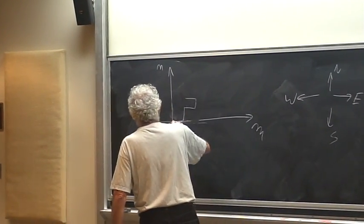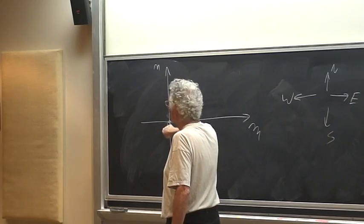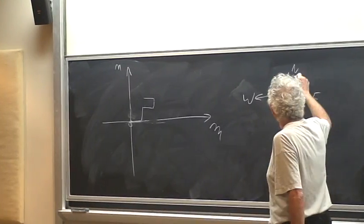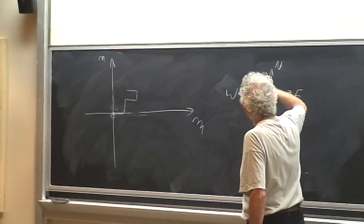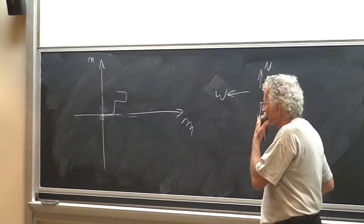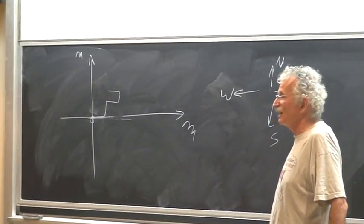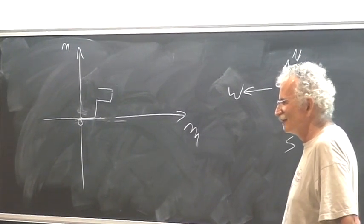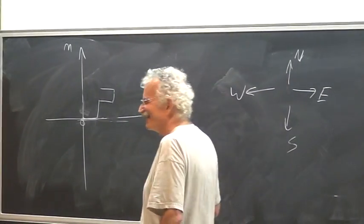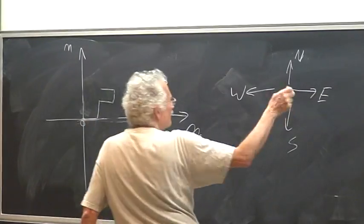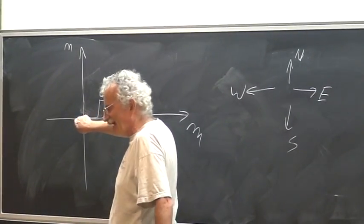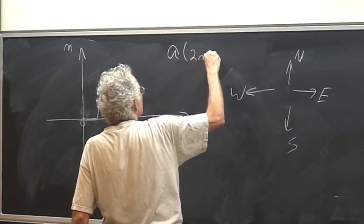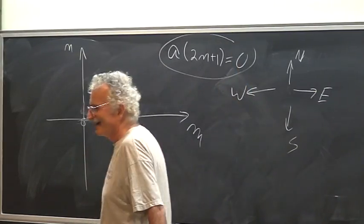How many ways can you get from the origin back to the origin using 11 steps? How many ways using only one unit steps? How many ways to get from origin back to origin using 11 steps? It is easy — zero. If you got from origin back to origin, it has to be even. So the number of ways is zero. That's really easy.